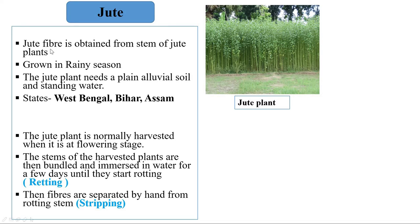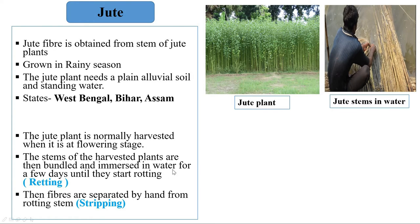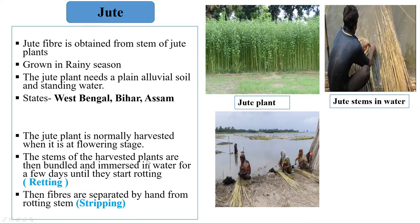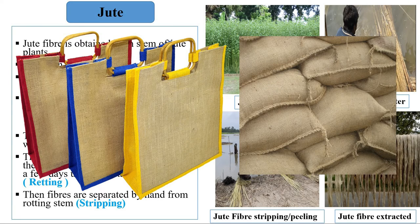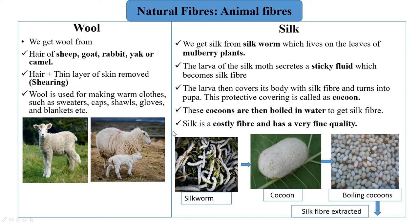Another important plant fiber is jute. Jute fiber is obtained from the stem of jute plants. It is grown in the rainy season and needs alluvial soil and standing water. In India, jute is mainly cultivated in West Bengal, Bihar, and Assam. Jute plants are harvested when in the flowering stage. The stems are bundled and submerged in water for a few days until they start rotting — this process is known as retting. The fibers are then separated by hand from the rotting stem, a process known as stripping. Jute fibers are extensively used to make shopping bags and gunny bags.